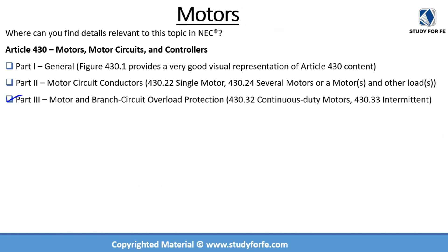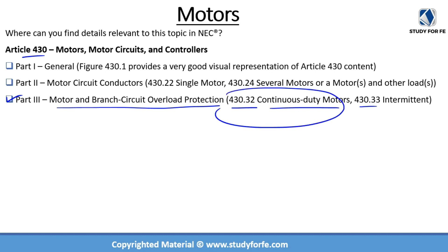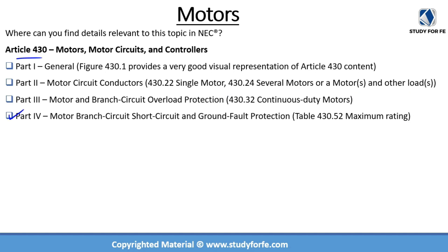Part 3 of Article 430 is titled Motor and Branch Circuit Overload Protection. I would like to draw your attention to two sections: 430.32, which deals with continuous duty motors, and 430.33, which deals with intermittent duty. Most of the time we are dealing with continuous duty motor applications, so please pay special attention to 430.32. Section 430.33 is very brief, so it will be a quick read.